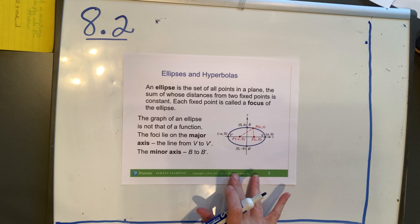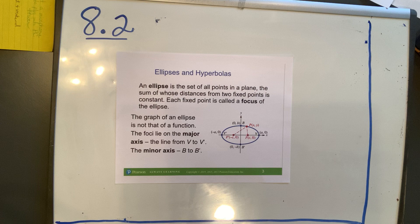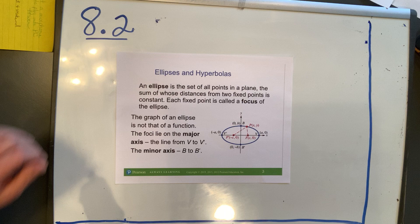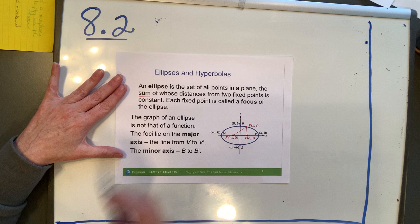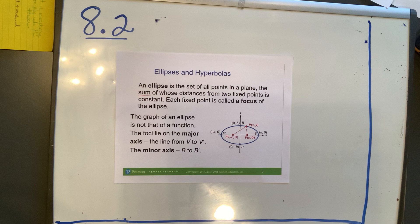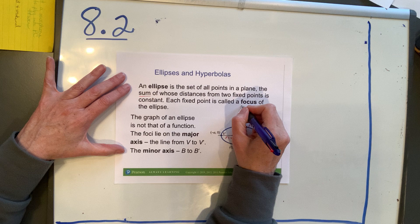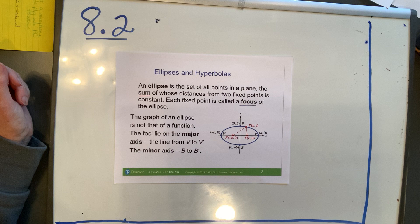The purpose of this video is to prepare you for the problems that you'll encounter in section 8.2 about ellipses. An ellipse is the set of all points in a plane, the sum of whose distances from two fixed points is constant. Each fixed point is called a focus of the ellipse.